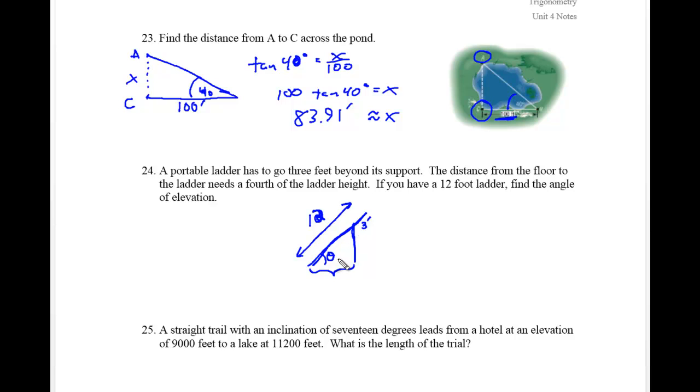If you have the ladder that far away, you're probably most likely to slide off and fall. But it says here a portable ladder has to go three feet beyond its support. The distance from the floor to the ladder needs to be a fourth of the ladder height. Now the ladder height is 12. So a fourth of the ladder height of 12. A fourth of 12 is 3. So this measurement down here going across is 3.